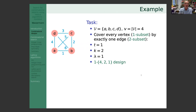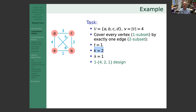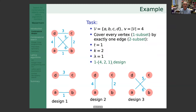Here's a toy example. We have four points called a, b, c, d — so v equals 4. We want to cover every vertex of the complete graph: every vertex is a 1-subset, so t equals 1; we cover it with blocks of size 2, so k equals 2; and we cover every vertex exactly once, so λ equals 1. This is a 1-(4, 2, 1) design. There are three different possibilities: with edges {a,b},{c,d}; {a,c},{b,d}; and {a,d},{b,c}.